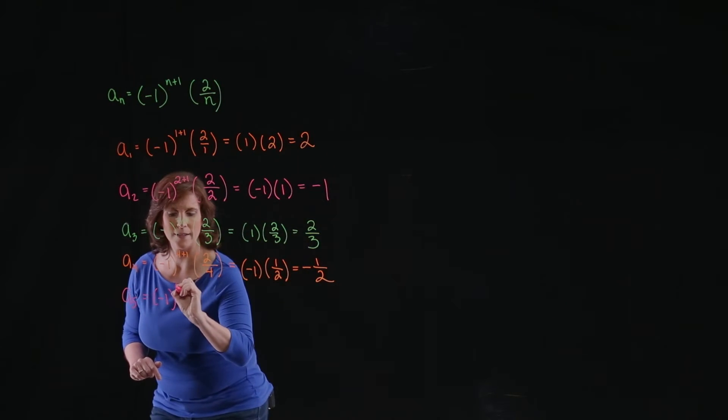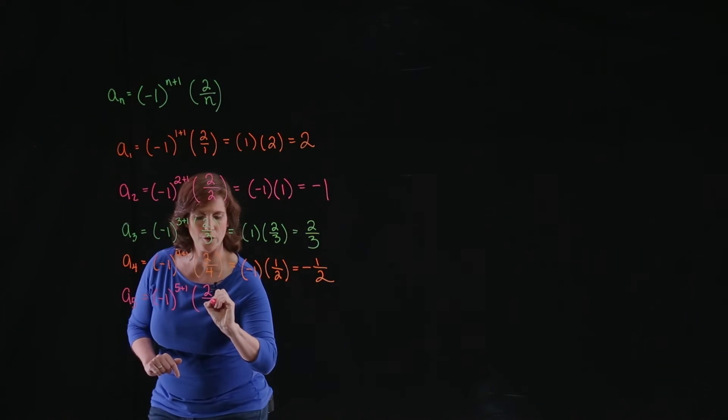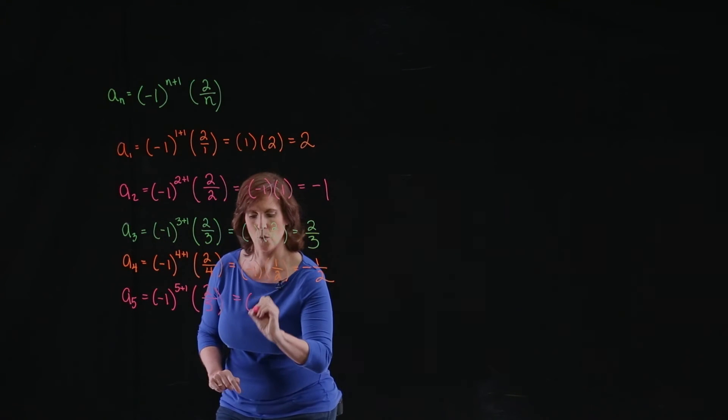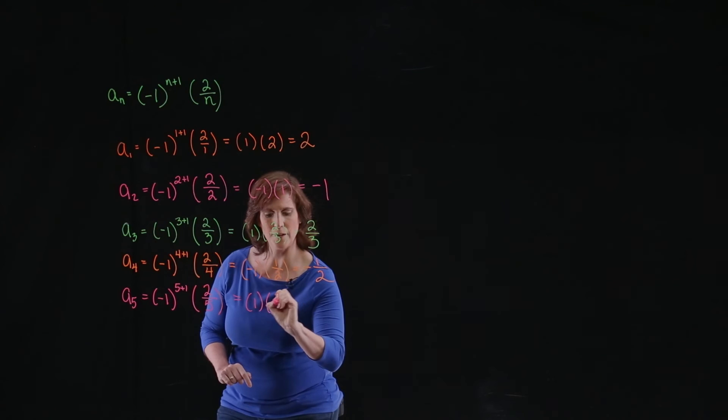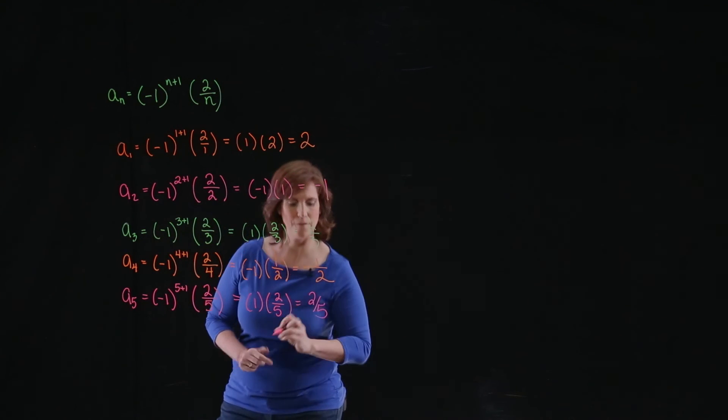For the fifth term, negative 1 to the sixth power is just 1 times 2 fifths gives us 2 fifths.